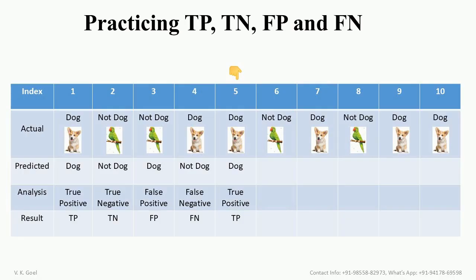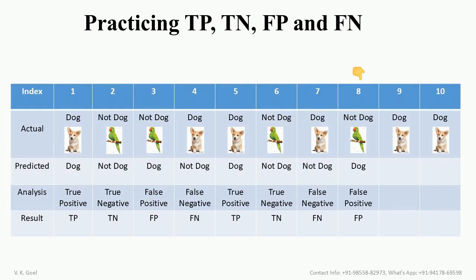Similarly, case number 5 can be resulted as true positive, that is TP. Case number 6 is interpreted as true negative, that is TN. Case number 7 is the example of false negative, that is FN. Case number 8 is false positive, that is FP. Case number 9 is false negative, that is FN. And finally, case number 10 is true positive, that is TP.